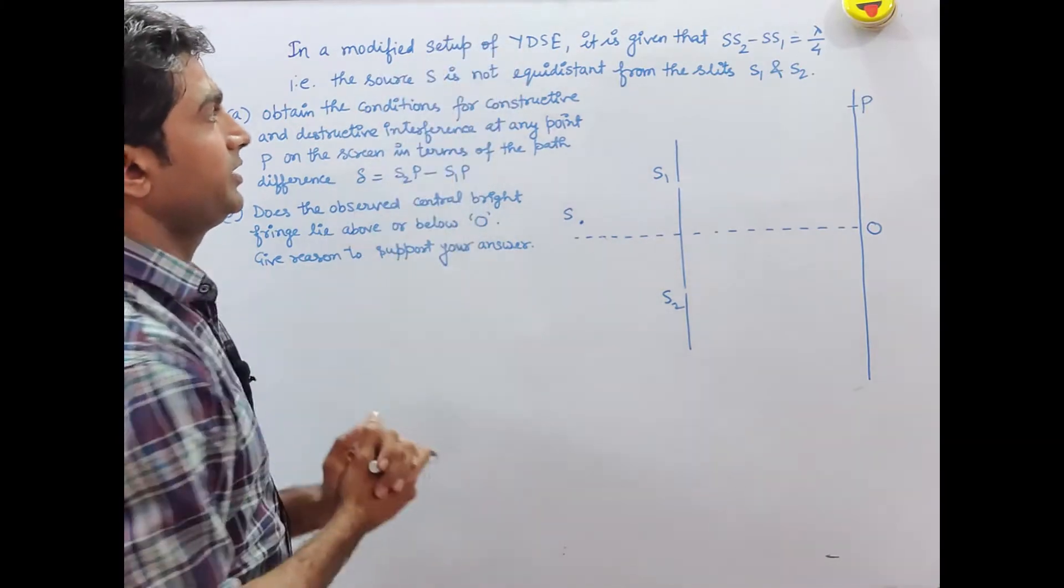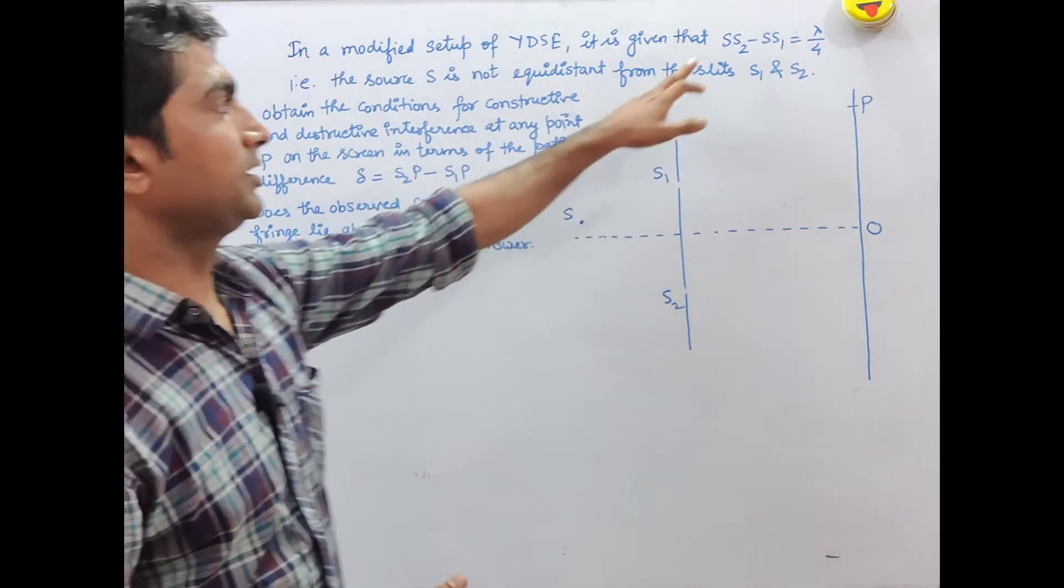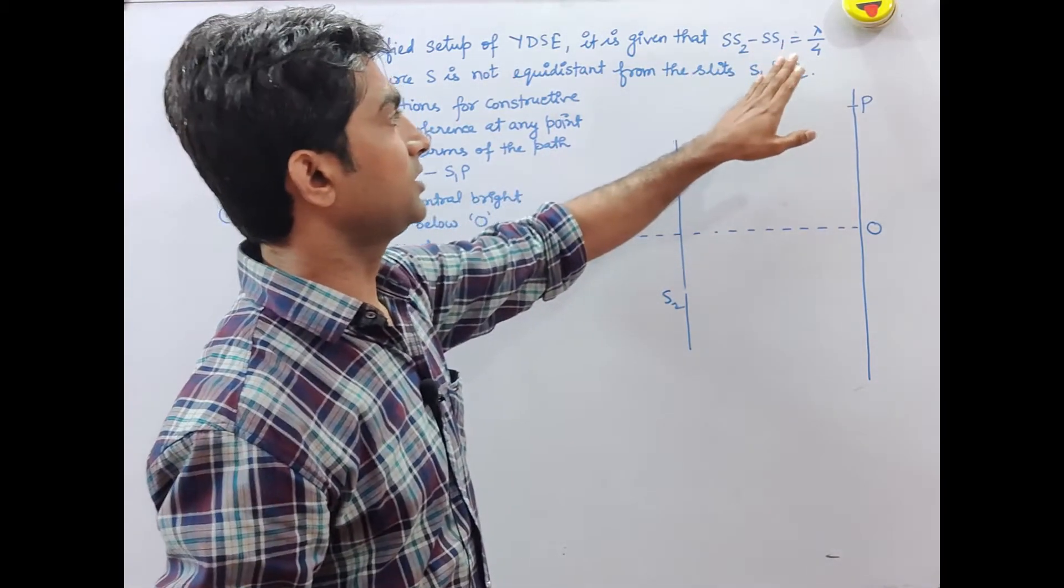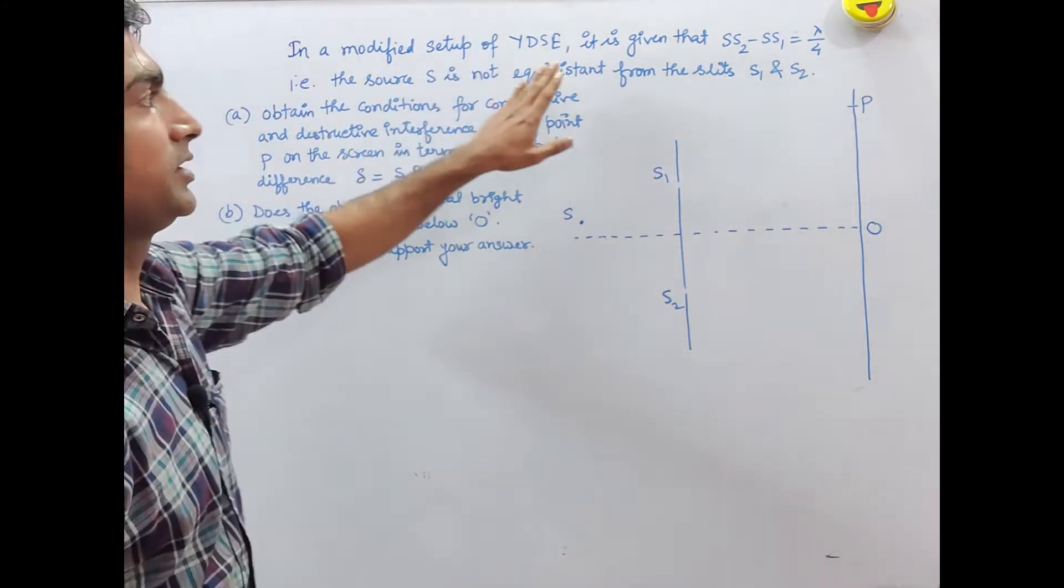In a modified setup of YDSE Young's Double Slit Experiment, it is given that SS2 - SS1 = λ/4, meaning the source is not equidistant from the slits.